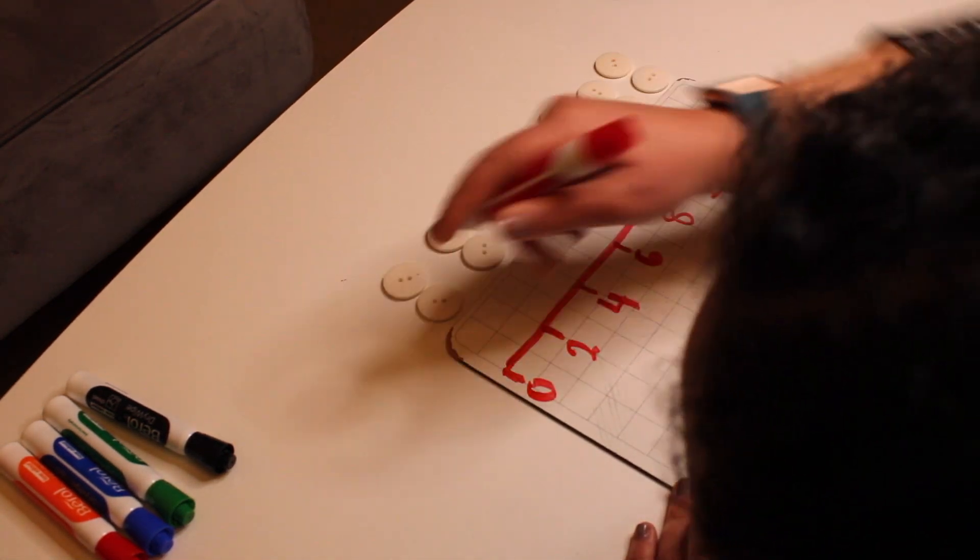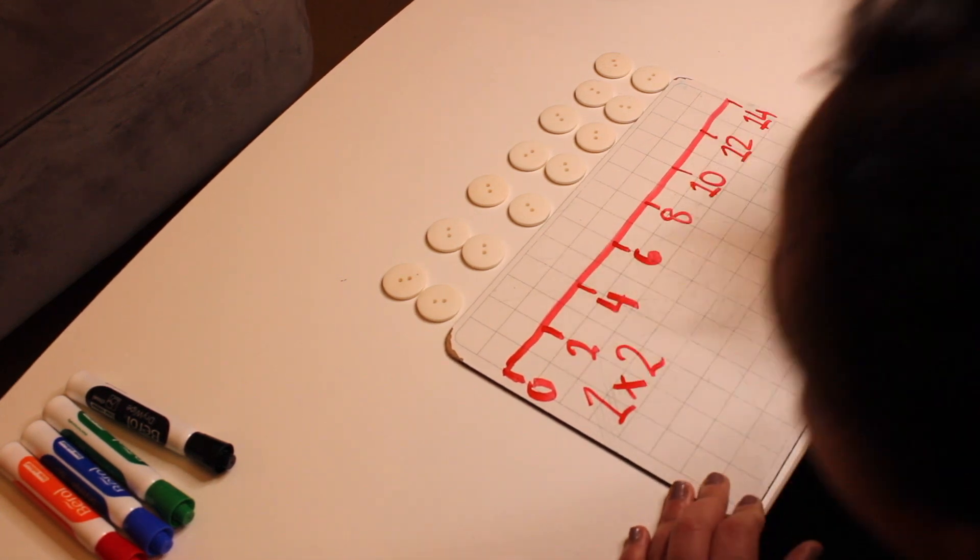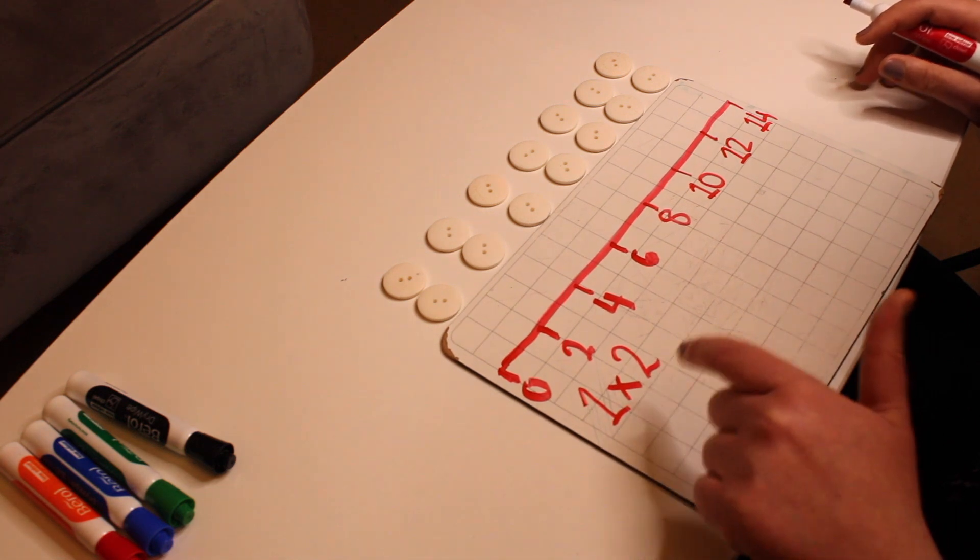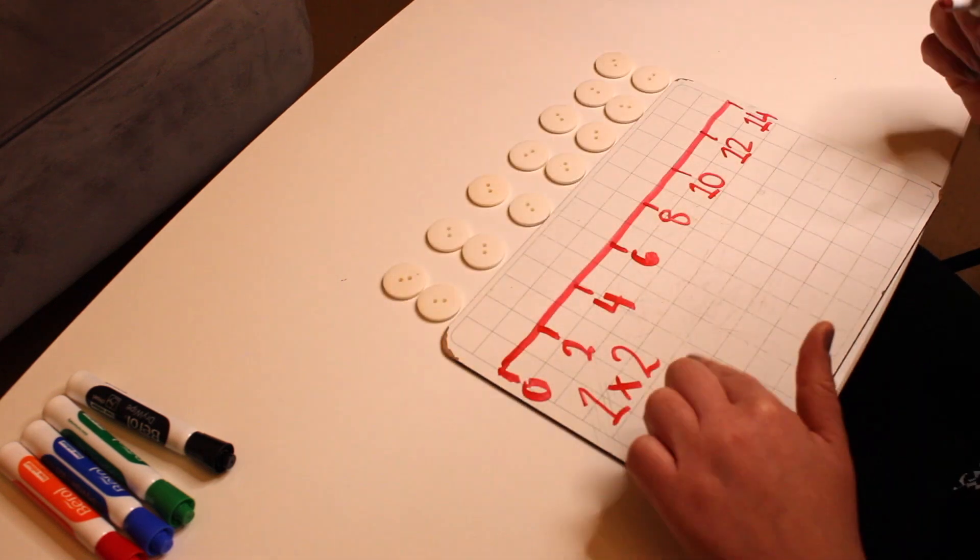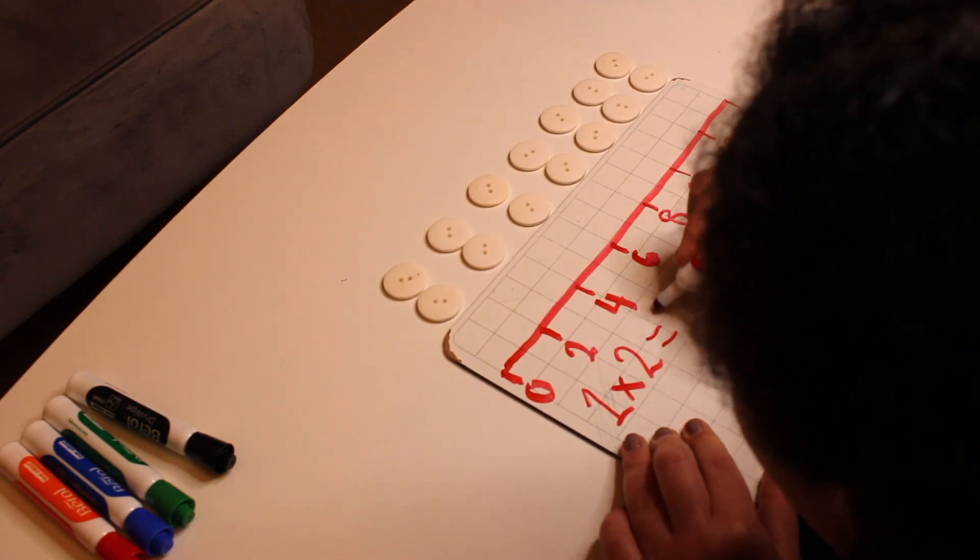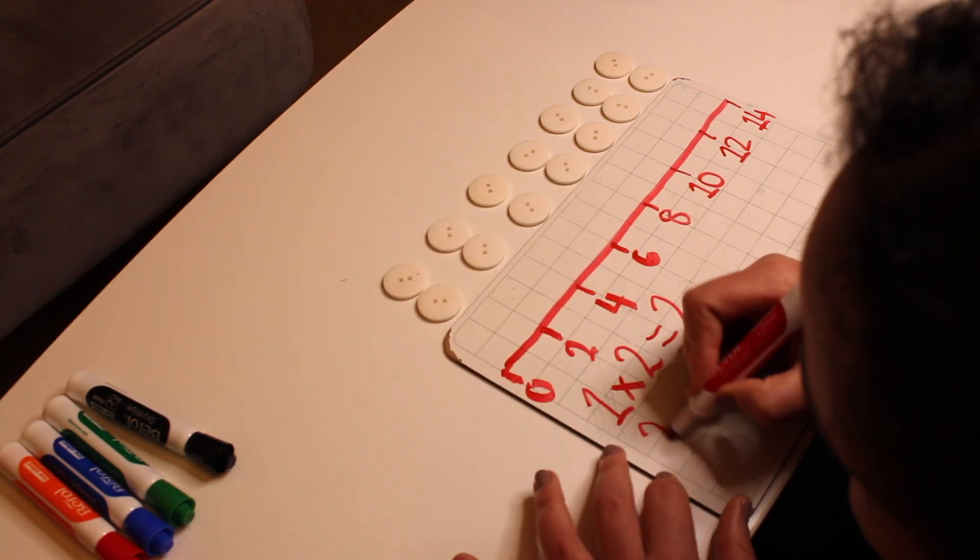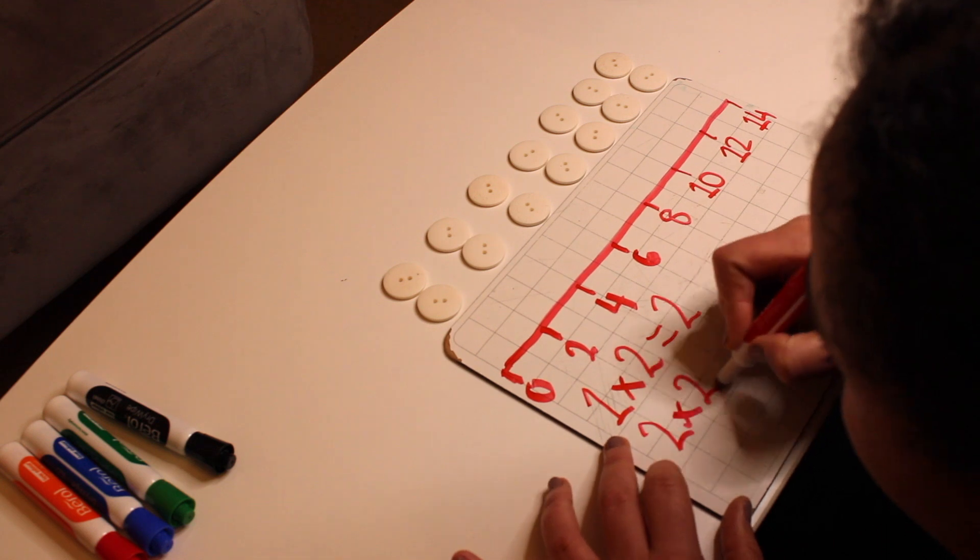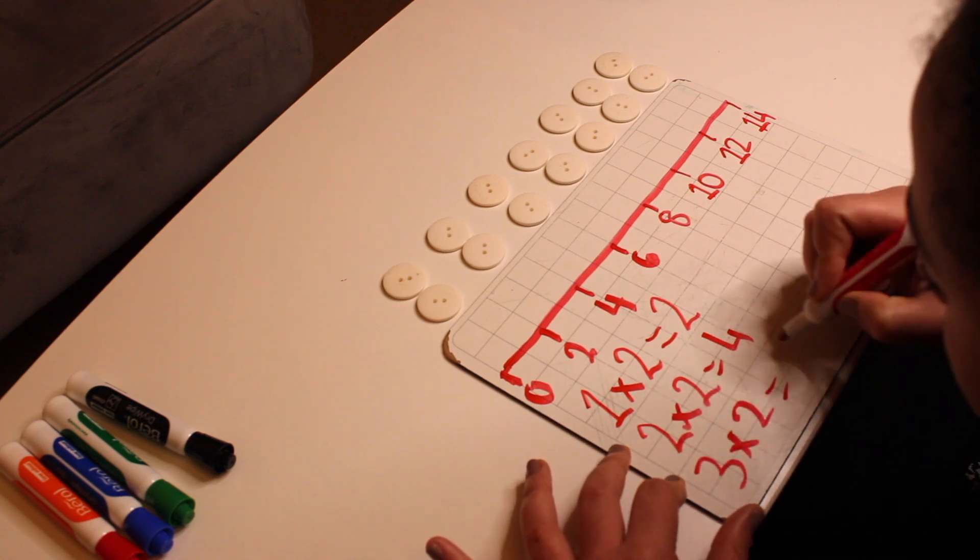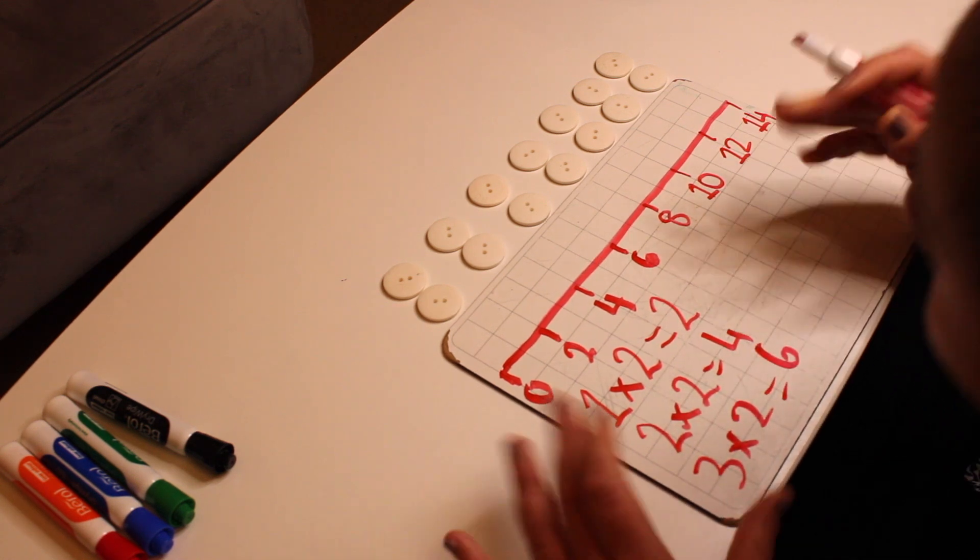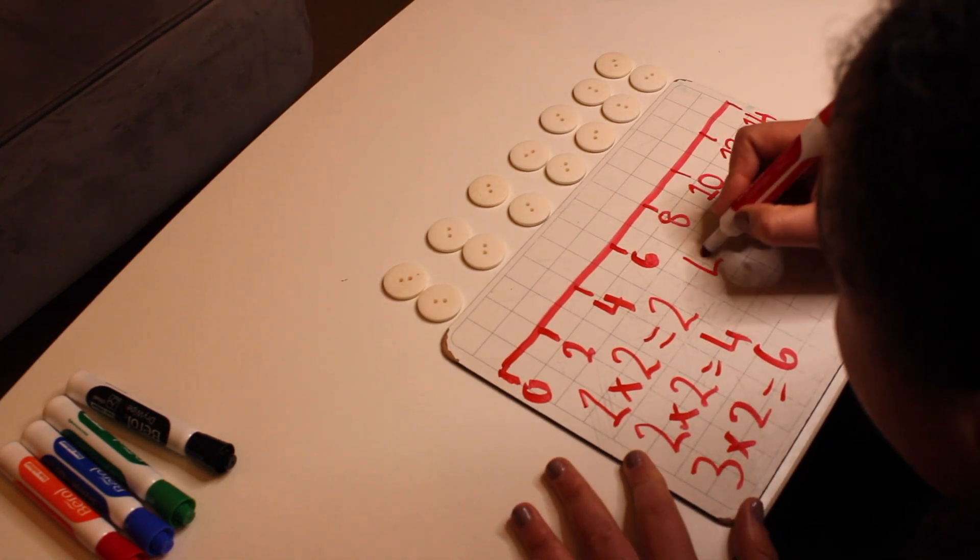So here we can start to write the times tables. So we can say, one group of two. Now we'll start introducing that multiplication symbol and exploring what that is. This means that we are using multiple groups of two. One group of two is equal to two. Two groups of two. Two times two is four. Three groups of two is six. And then you can continue this.